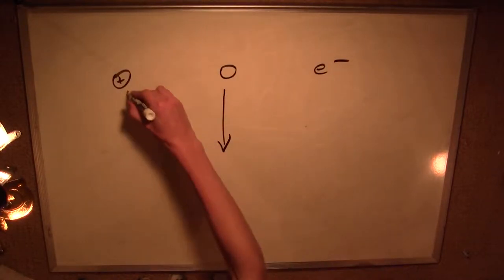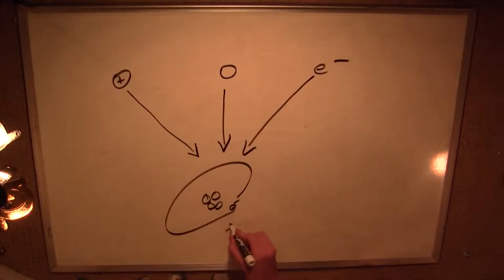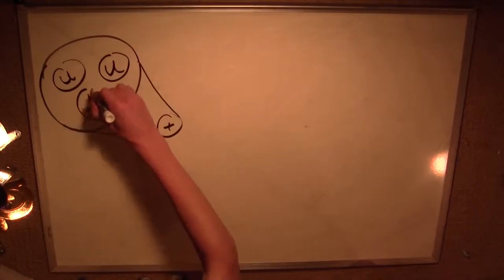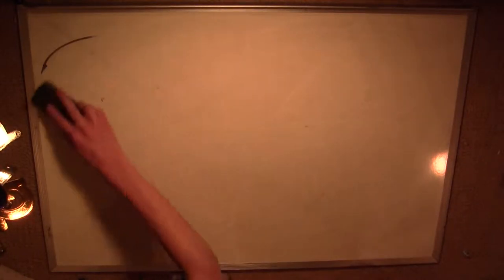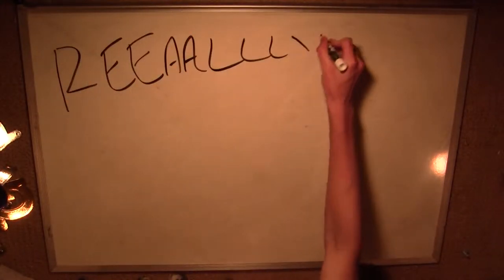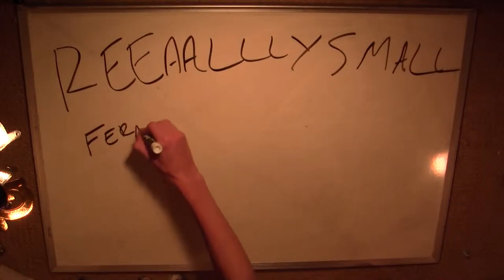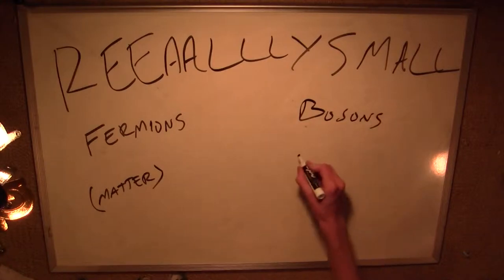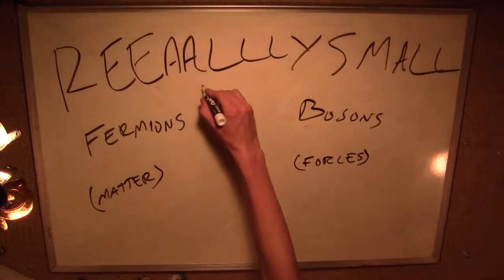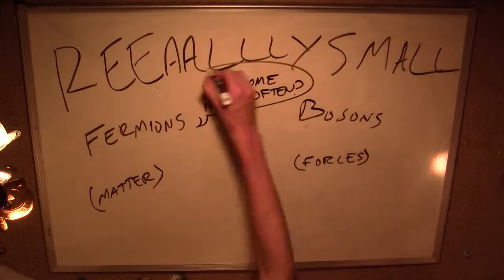We all know about protons, neutrons, and electrons, the constituents of atoms, but things get even smaller than that. For example, protons and neutrons are made out of elementary particles called quarks. Elementary particles are the smallest things that can't be broken down into anything smaller, and they're classified into groups called fermions, which are generally particles that make stuff, and bosons, which are generally particles that do stuff. Quantum mechanics is simply the science that describes how they all interact.